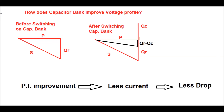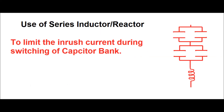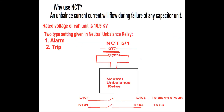What is the use of the series reactor in each capacitor bank? When we switch on the capacitor bank, the capacitor units act as a short circuit and will take a huge amount of inrush current. To limit this inrush current during switching on of the capacitor bank, series reactors are used.